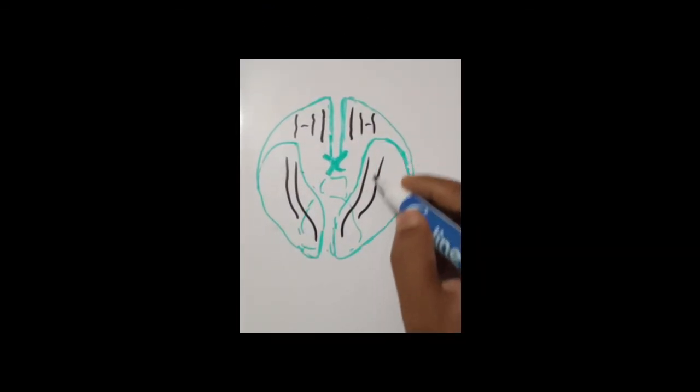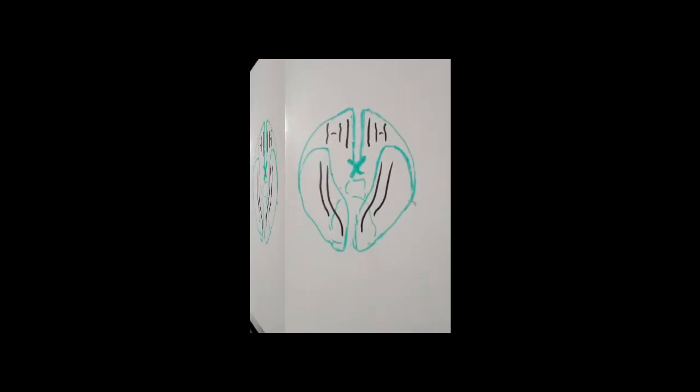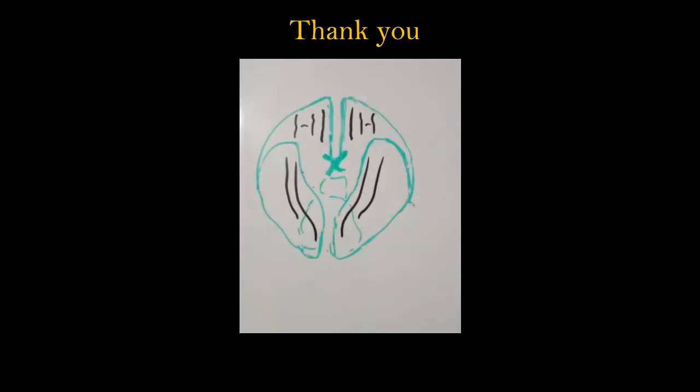Just medial to it is the medial occipitotemporal gyrus, and lateral to it is the lateral occipitotemporal gyrus. This is the inferior surface of the cerebral hemisphere.